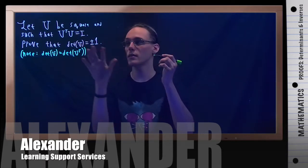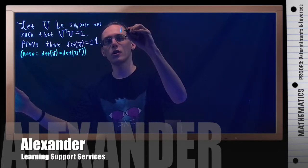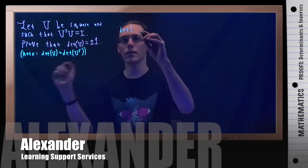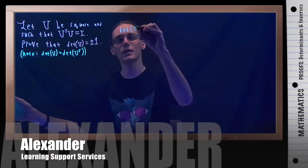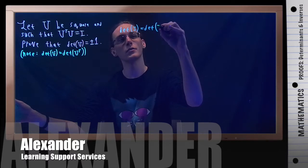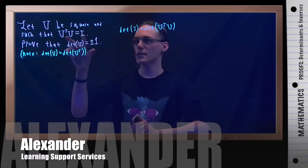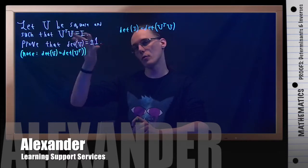The determinant of the identity matrix is equal to the determinant of U transpose U. I'm basically taking this and taking the determinant on both sides.